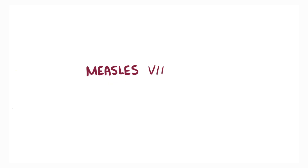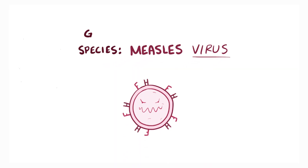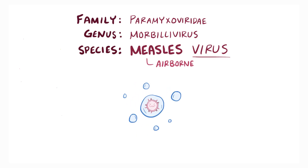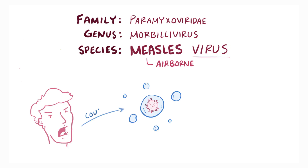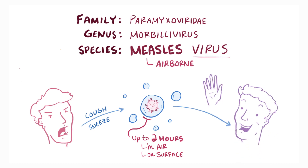Regular measles is caused by the measles virus, the species is the measles virus, of the genus Morbillivirus and family Paramyxoviridae. The reason why this virus is so contagious is that it's airborne, and spreads via tiny liquid particles that get flung into the air when someone sneezes or coughs, and can live for up to two hours in that airspace or nearby surfaces. If someone breathes in that air or touches a surface and then touches their eyes, nose, or mouth, they can become infected.